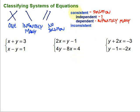The other situation is an inconsistent system, which means there's no solution. Now, based on knowing these three things that can happen, we can actually figure out how many solutions and classify the system without even graphing it. The first thing we're going to do is write each equation in slope-intercept form — our good friend y equals mx plus b. We're basically going to solve each of the equations for y.